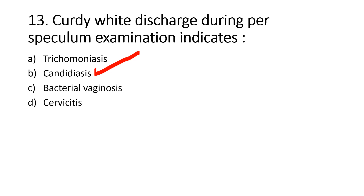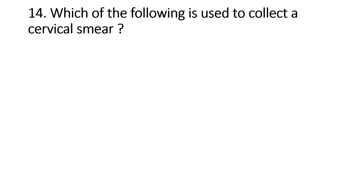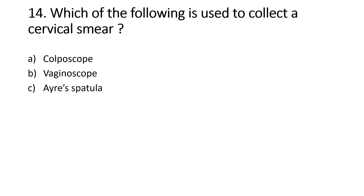The instrument used to collect a smear from the cervix is: Option A, Colposcope; Option B, Vaginoscope; Option C, Iris spatula; Option D, Sponge forceps. Right answer is Option C, Iris spatula. The iris spatula is used to collect samples from the vaginal mucosa and cervix for examination.